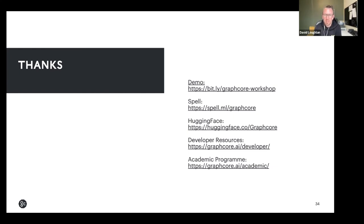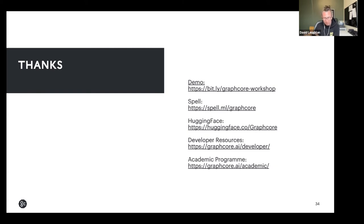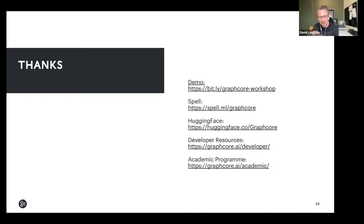I've got a question — more me being nosy. Graphcore and the technology is clearly being used at the cutting edge of data science, machine learning, and AI. The use cases highlighted were super interesting. Have you personally come across one that was the biggest impact or that you thought was really cool?